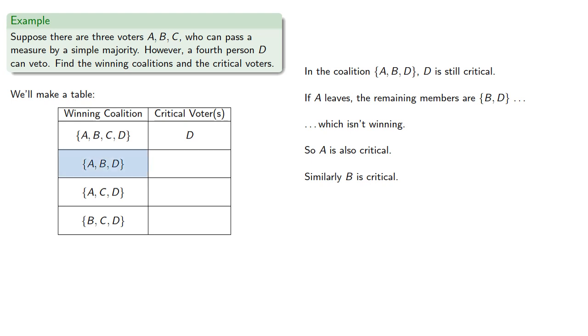So in the coalition A, B, and D, the critical voters are A, B, and D. We can make a similar argument for the coalitions A, C, D and B, C, D, which gives us the critical voters.